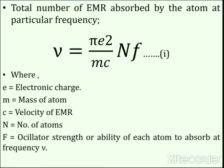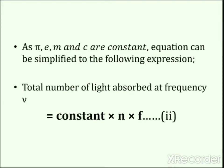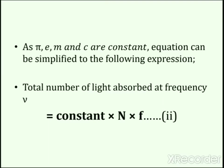In this equation, e is electronic charge, m is mass of the atom, c denotes velocity of electromagnetic radiation, n denotes number of atoms, and f is oscillator strength, or the ability of each atom to absorb at frequency nu. As π, e, m, and c are constants, the equation can be simplified: the total number of light absorbed at frequency nu equals a constant times nf. This is equation number 2.